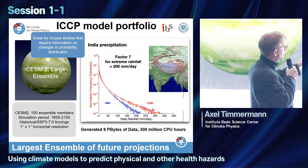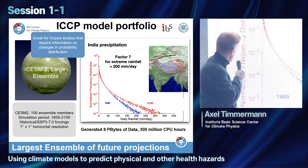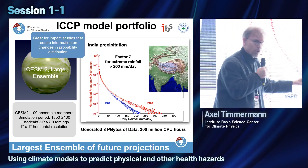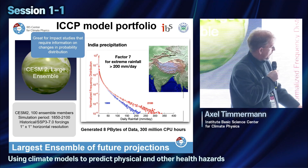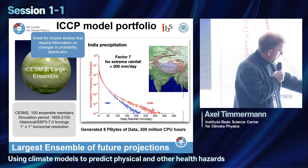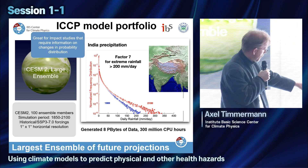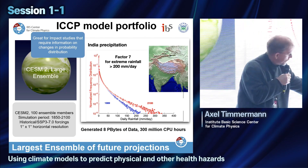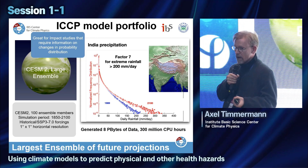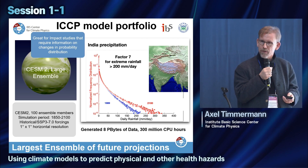For example, we can compare daily rainfall distributions over India. As we warm our planet following this scenario, the likelihood of extreme rainfall events intensifies dramatically. Keep in mind this is a logarithmic scale, so extreme rainfall events in India following this warming scenario will intensify by a factor of seven. Infrastructure needs to be updated, and later on we will look at Korea as well.